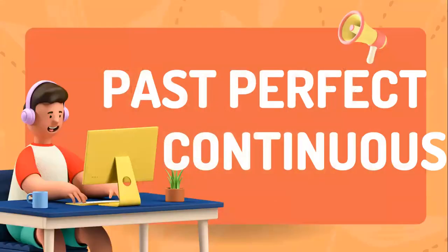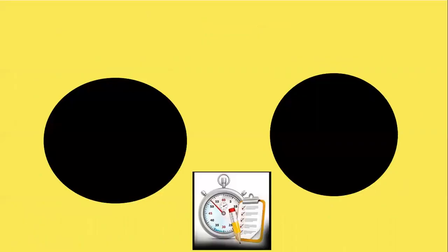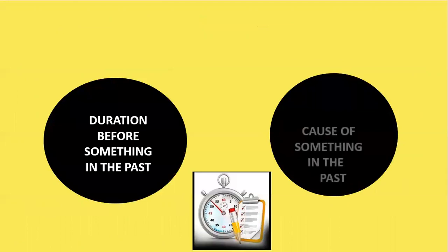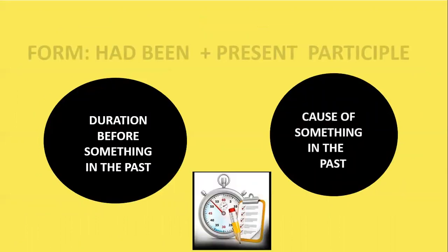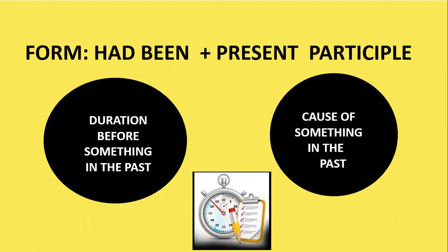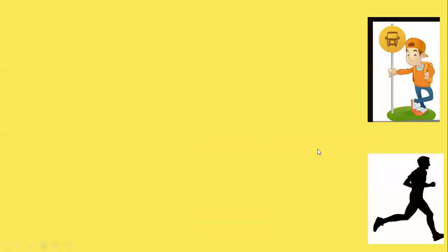Then comes past perfect continuous. You use past perfect continuous to talk about duration before something in the past and to talk about the cause of something in the past.